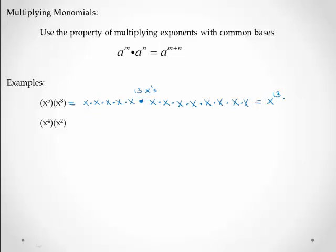You don't have to write all of these out and then count them up. You can just add them together. x to the 13 is the same thing as x to the 5 plus 8. Here I have x to the 4th times x squared. That's x to the 4 plus 2, so that will be x to the 6th. And if I had written it out, I'd have four x's and then two more x's.